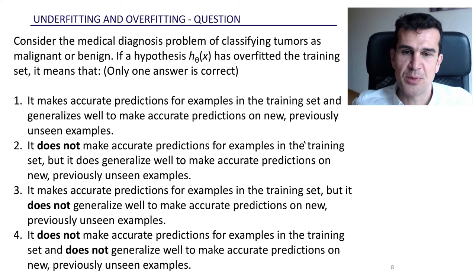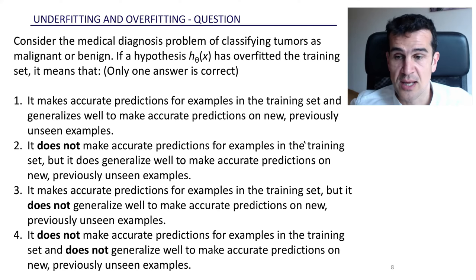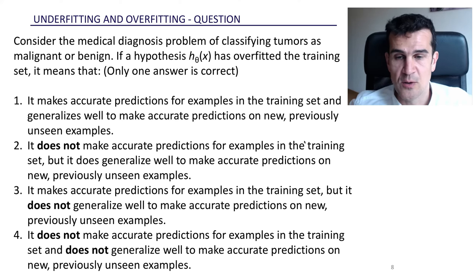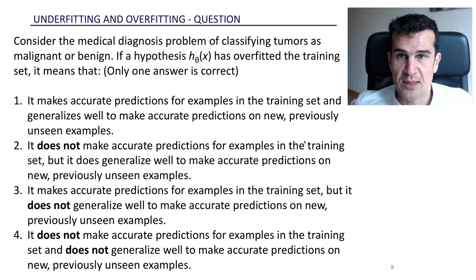Third, it makes accurate predictions for examples in the training set. So far, so good. But it does not generalize well to make accurate predictions on new, previously unseen examples. That is not good. And this is the definition of overfitting. We're fitting the training set really well, but too well. We're capturing part of the noise, part of the random component in the training data. And that's why we don't generalize well. When we look at new data, which is another sample of the underlying process, the random component is different. And then we don't do well. That is the right answer. We're overfitting in answer three.